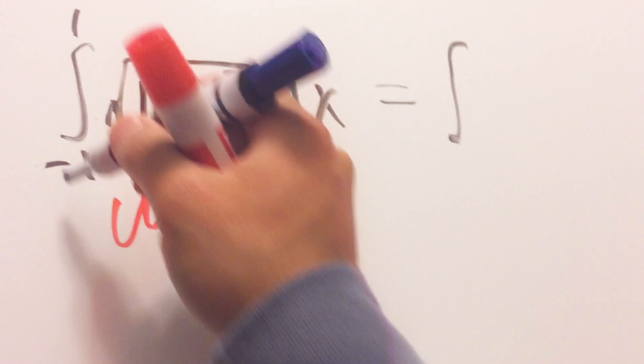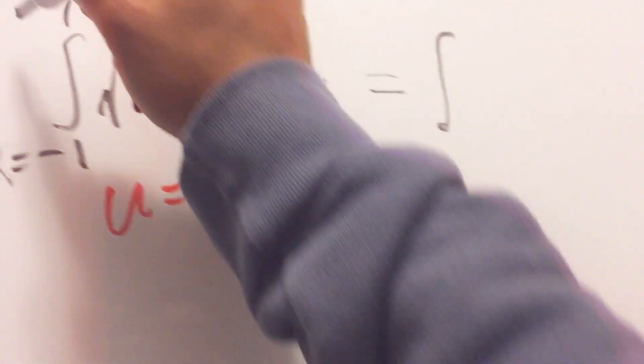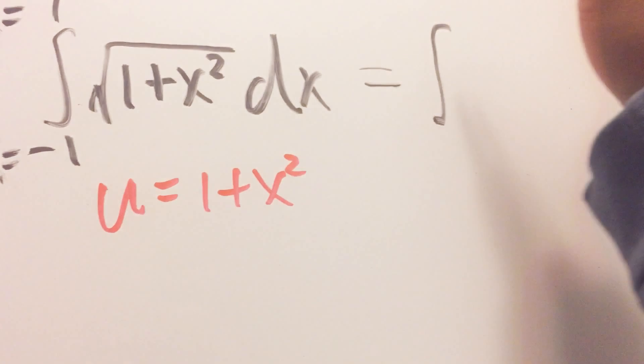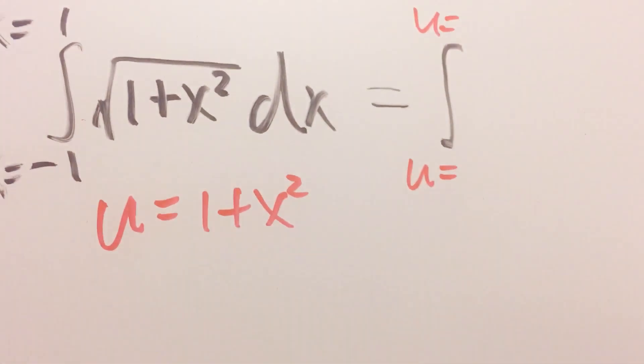Remember the limits right here were in terms of x right, x equals negative 1 up to x equals 1. Right here we have to make sure we change this to u, u equals something to u equals something else.